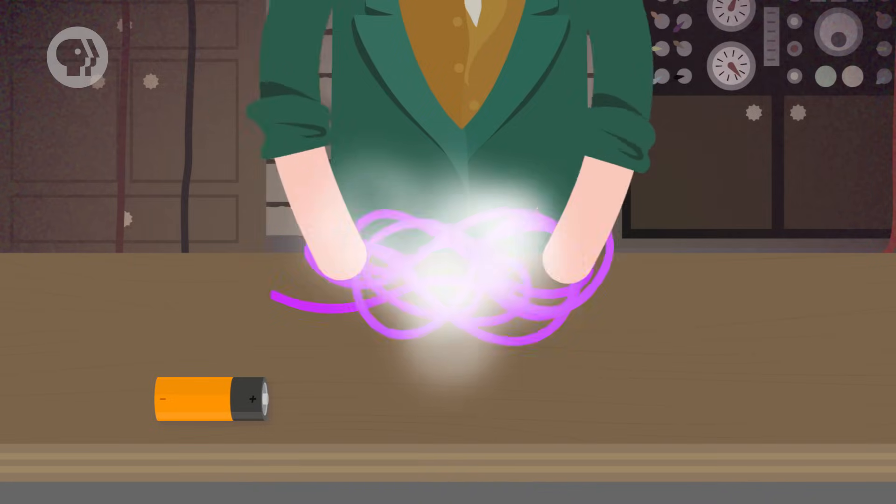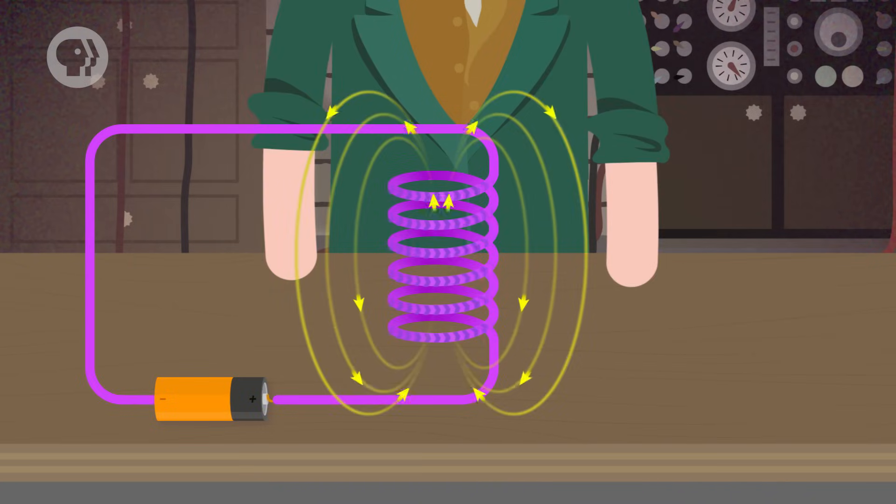And that's not the only weird thing that current-carrying wires do. If you wrap a current-carrying wire into a coil, the inside of the coil acts like a magnet. There's a north pole at one end of the coil, and a south pole at the other.